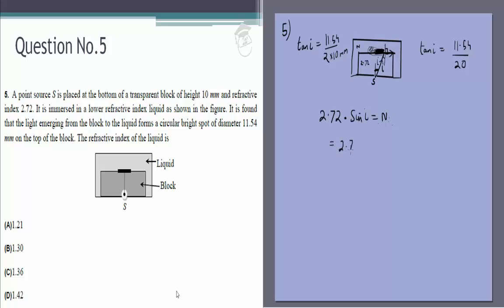So it will be 2.72 multiplied by sin i. If tan i is this, then sin i will be 11.54 by root of 11.54 squared plus 20 squared which will be 400. And if you solve this it comes out to be equal to 1.36.